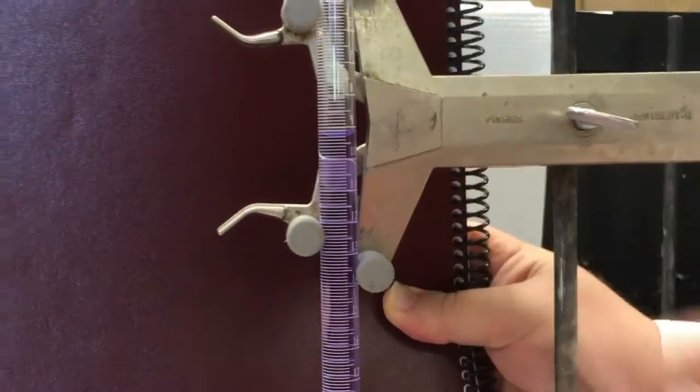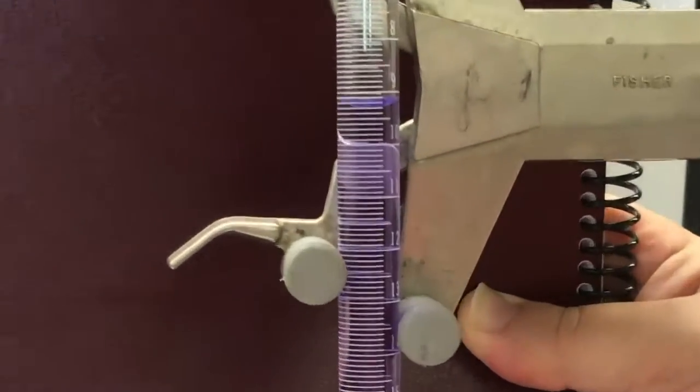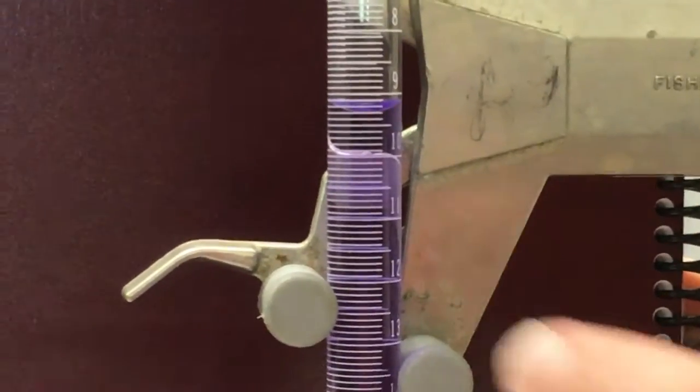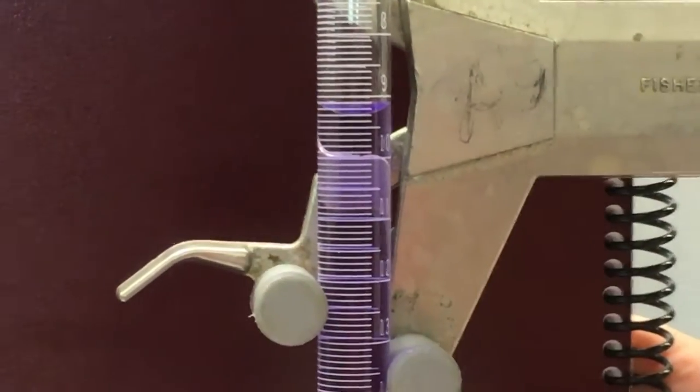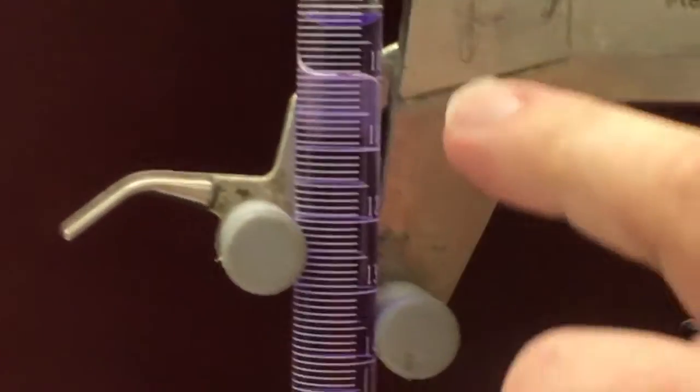So looking at the liquid level here, let's try and get that measurement as the initial volume of solution, okay? So looking at this, you can see there's some curvature to the liquid there. That's called the meniscus. You always take the measurement at the bottom of the meniscus.